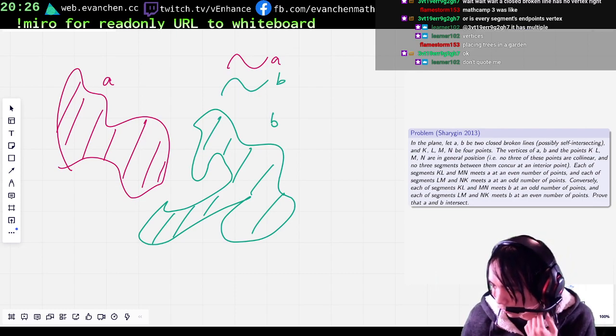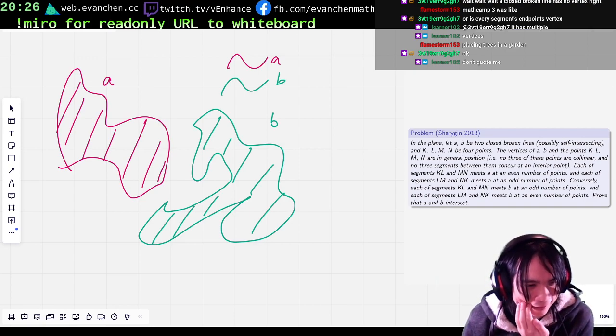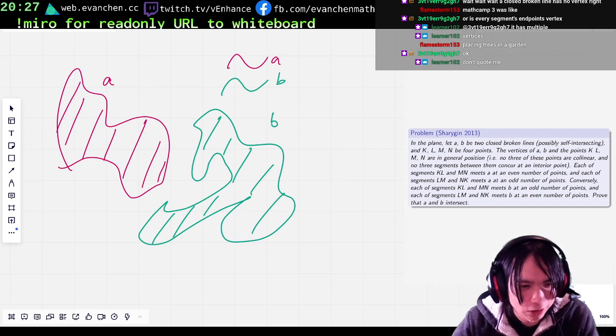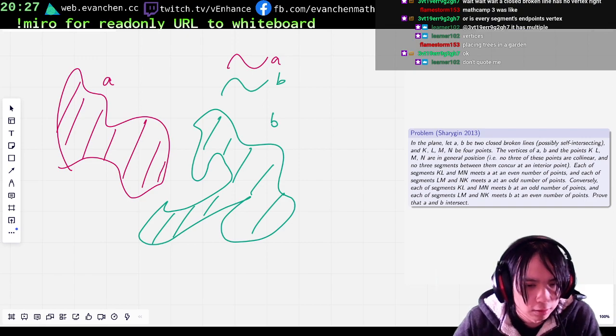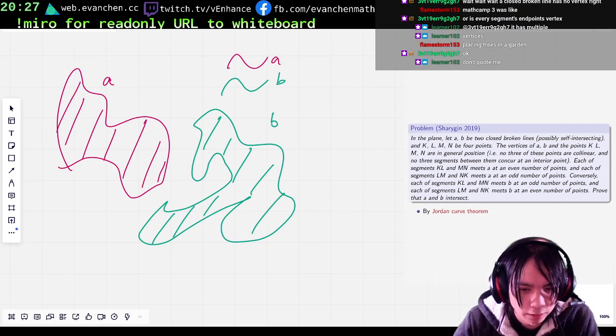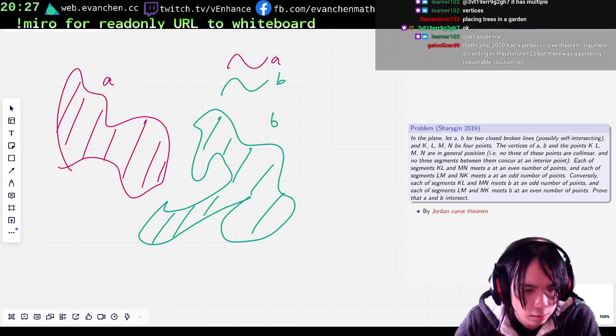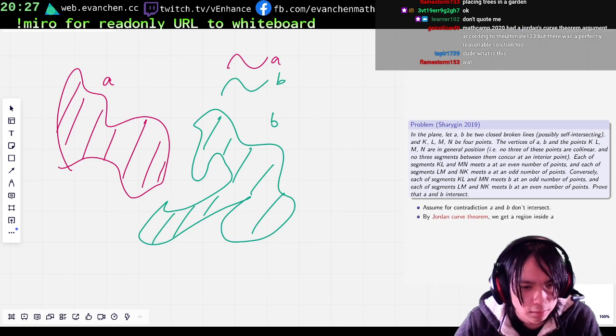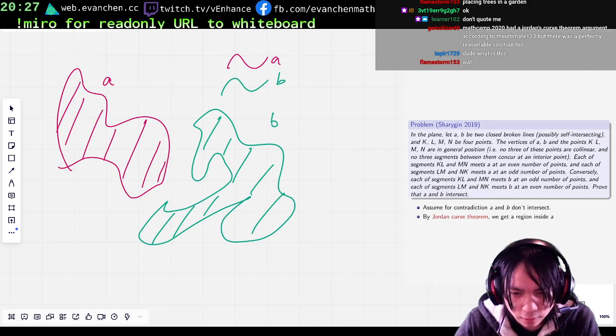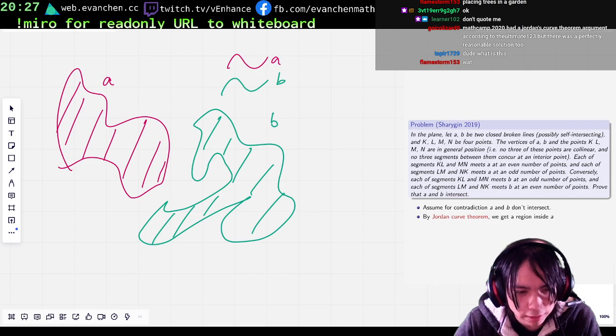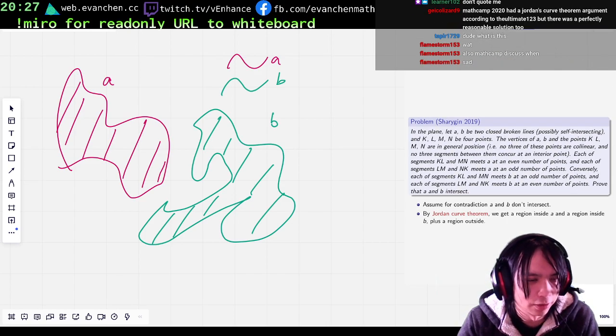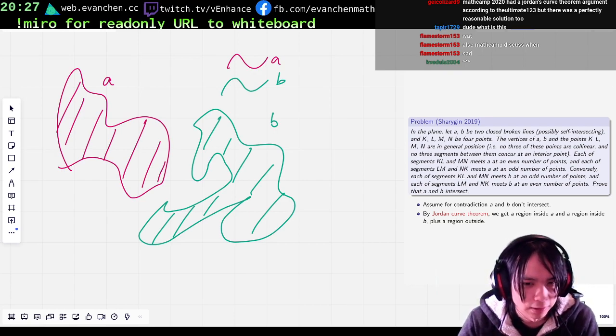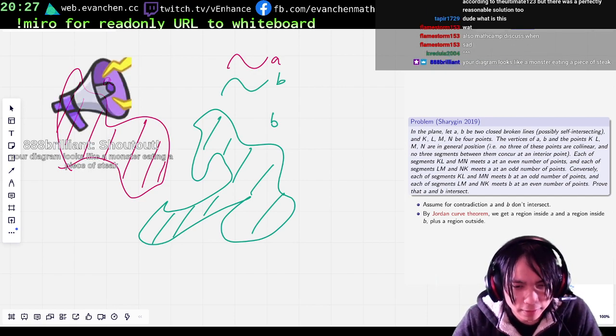So, um... Let's say, like... Oh god. Wait, is this gonna... I'm very confused now. Okay. So, by Jordan Curve Theorem... we get a region inside A... Let's say assume for contradiction. We get a region inside A, and a region inside B. Plus a region outside. So, there are four possibilities for KL... Er, three—There's KL and N. And... You know, each of these four points can be in three places. Um... Like... Inside, outside, or...